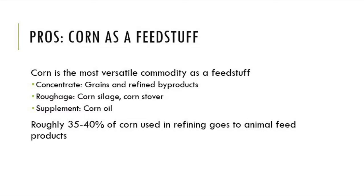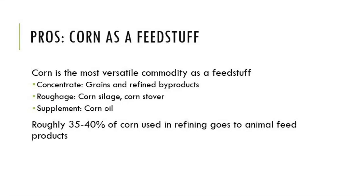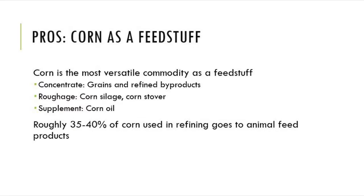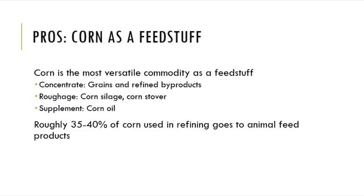Corn also has a lot of versatility as a commodity. For example, you can use corn as a concentrate such as rolled corn or crimped corn, but it can also be used as a roughage as corn silage or grazing cattle out on corn stubble or corn stover. There are also supplements such as corn oil extract that are used in livestock feeds to basically dust the corn. Roughly 35 to 40 percent of corn used in refining goes to animal feed products.